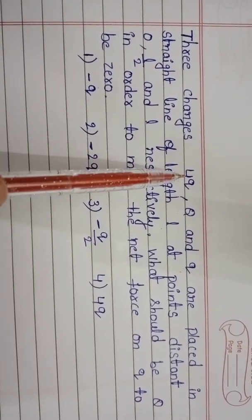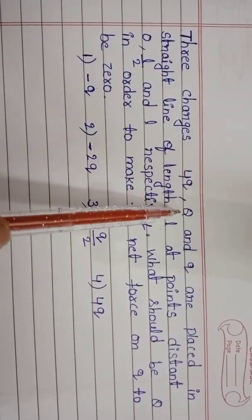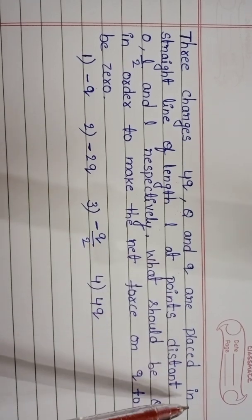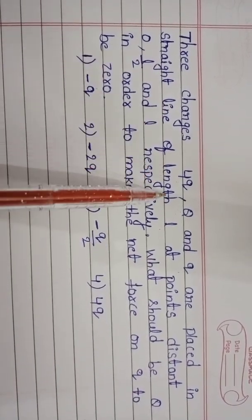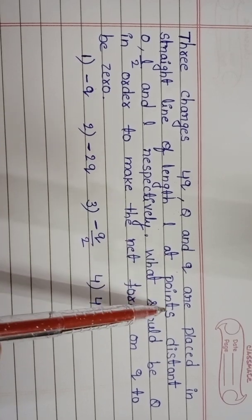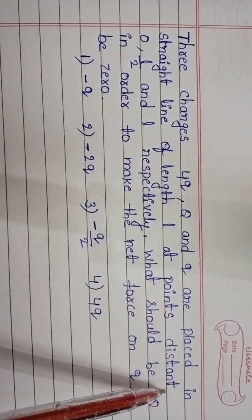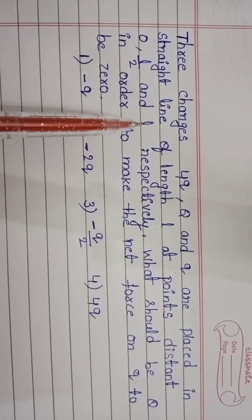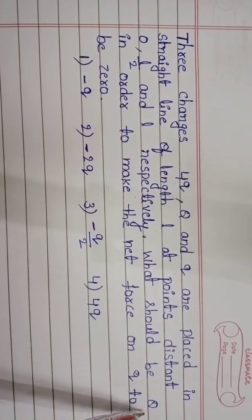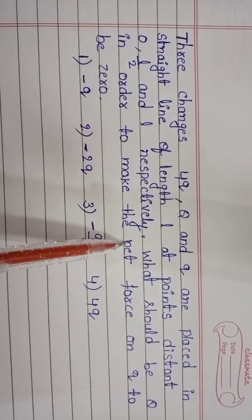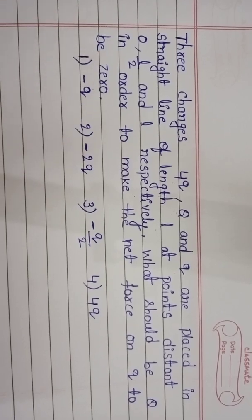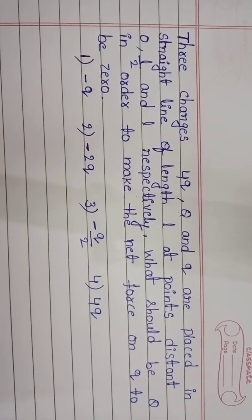Three charges, 4Q, Q, and q are placed in a straight line of length L at points distant 0, L/2, and L respectively. What should be capital Q in order to make the net force on small q to be 0?